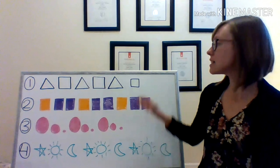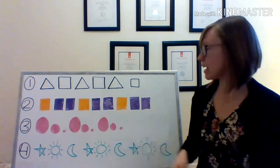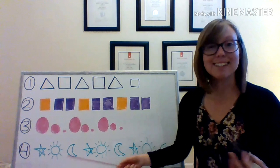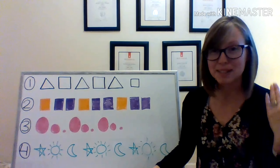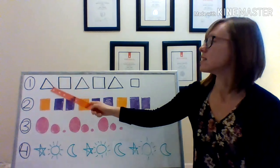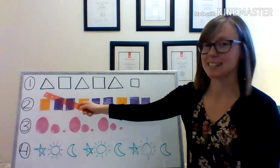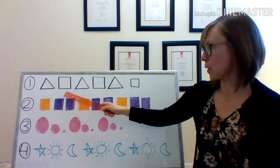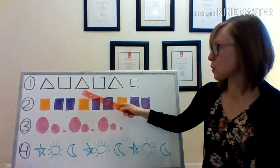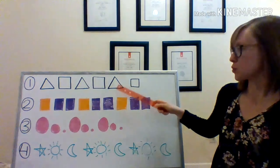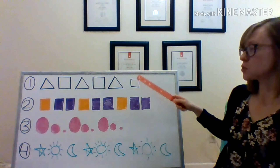Let's look at our first pattern here. Let's say it out loud to hear what the pattern is. The first pattern is: triangle, square, triangle, square, triangle, square.